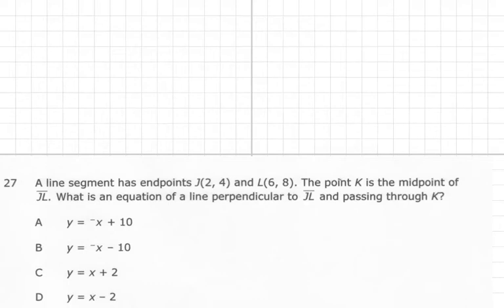Alright, number 27. A line segment has endpoints J(2, 4) and L(6, 8). The point K is the midpoint of JL. What is an equation of a line perpendicular to JL and passing through K?